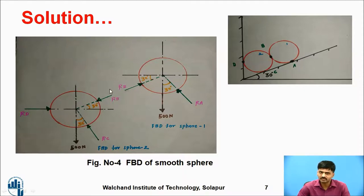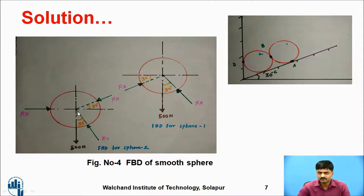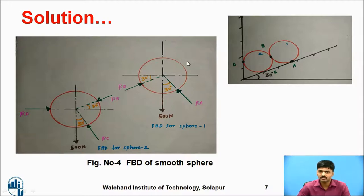Contact surface B is present — the angle with respect to the x-axis is 30 degrees. Similarly for sphere two, there are two contact surfaces: weight 500 newtons downward, reaction R_C at 30 degrees from vertical, and one more reaction R_D which is exactly perpendicular to the vertical plane.